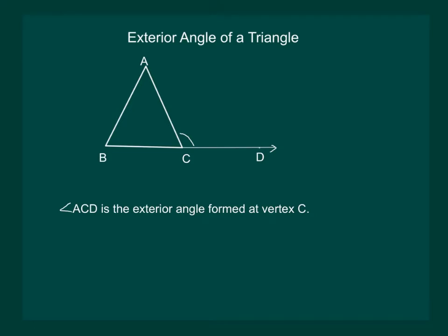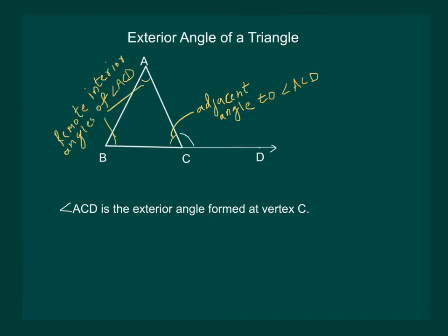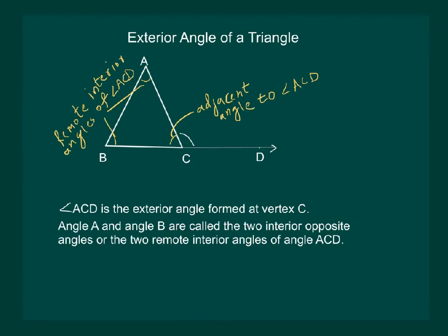Angle BCA is called the adjacent angle to angle ACD, and the remaining two angles, that is angle A and angle B, are called the remote interior angles of angle ACD — also referred to as the two interior opposite angles.